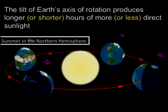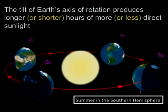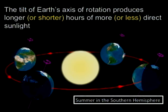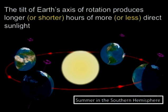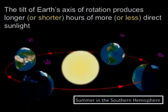If we follow the orbit and look at Earth six months later, notice how the Sun is high up in the sky for an observer in the southern hemisphere and low in the sky for someone in the northern hemisphere. In this case, it's summer in the southern hemisphere and winter in the northern hemisphere.